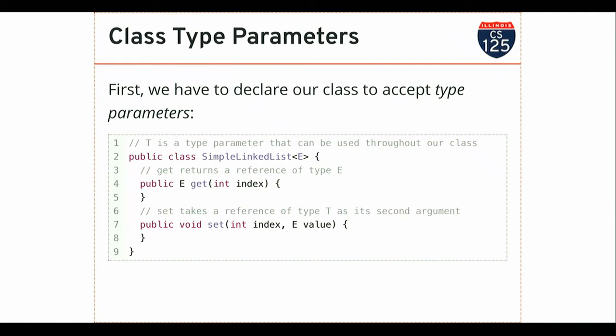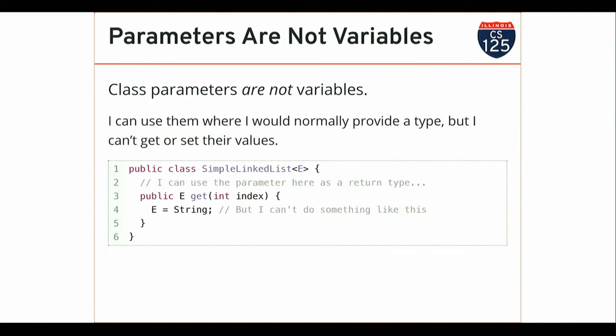This is new: inside these angle brackets, I'm declaring that the class accepts a type parameter, and I can use that type parameter anywhere I would normally see a type — as a return type, or to indicate what kind of variable has to be passed to a method. Type parameters are not variables — it's a parameter. I can't take my type parameter and assign an actual concrete type to it. I can use it in declarations and method return types, but I can't assign it or read it into another variable.